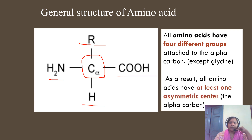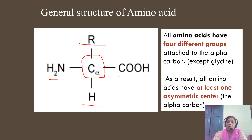Because this alpha carbon is linked to four different groups, it has an asymmetric center, so all amino acids have at least one asymmetric center. Depending on the group present on the side chain, the number of asymmetric carbon atoms might vary. An asymmetric or chiral carbon refers to the carbon which is linked to four different groups or different atoms.